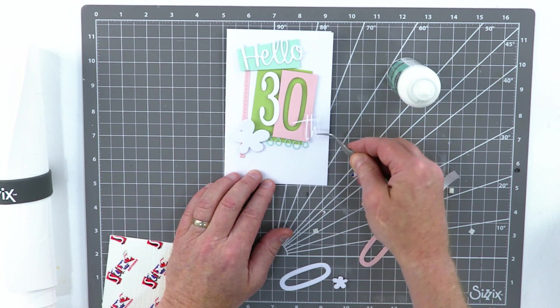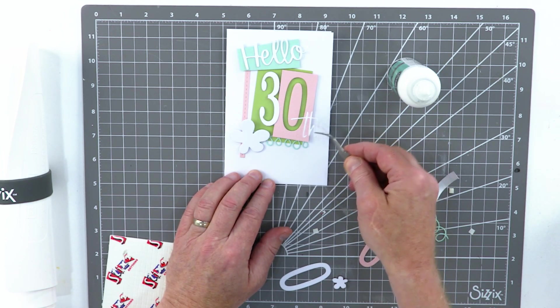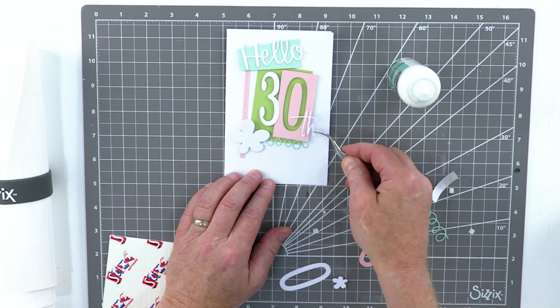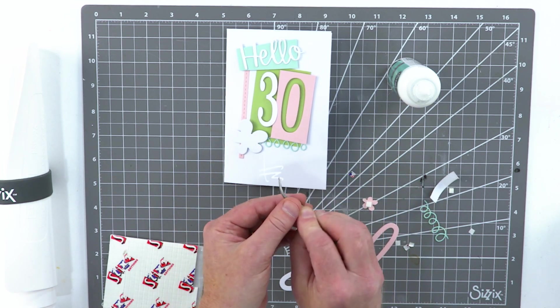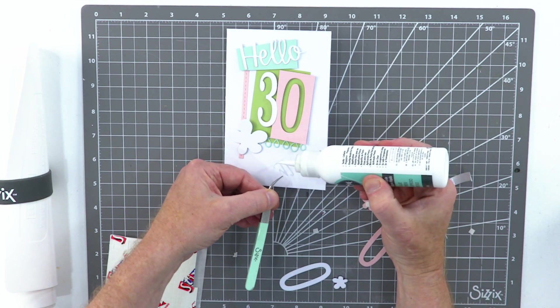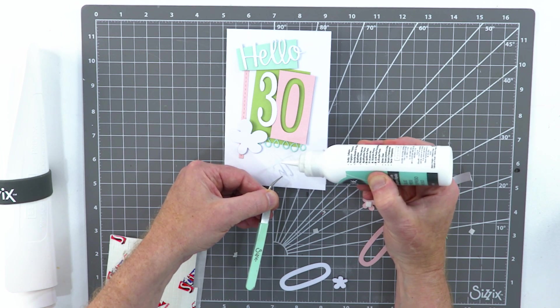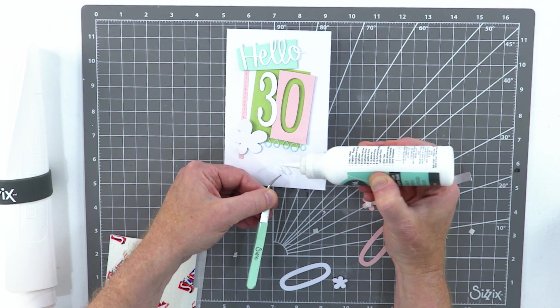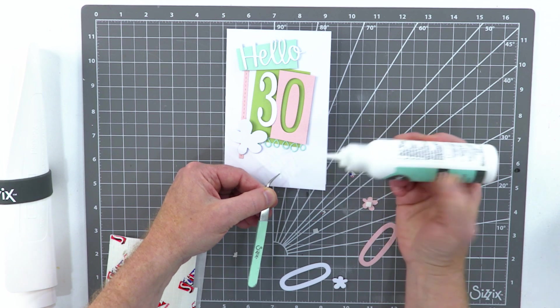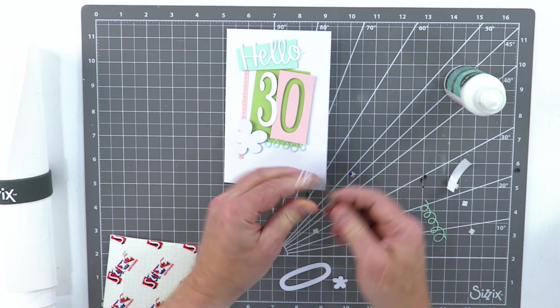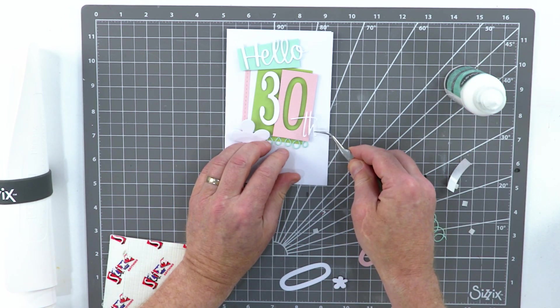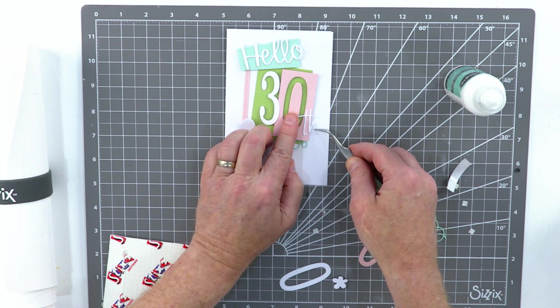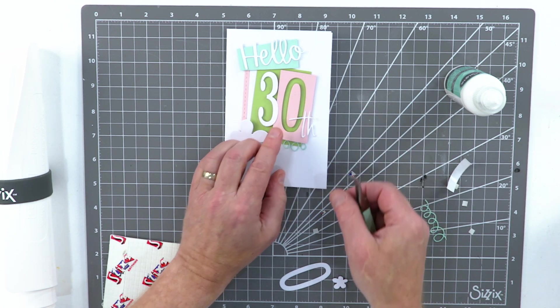Some people prefer to use it direct from the bottle. I tend to use my media mat I must be honest, but I just want to show you that from the bottle is perfectly acceptable. So I've got a few more elements, the th as in 30th. There we are, we'll set that somewhere like this.